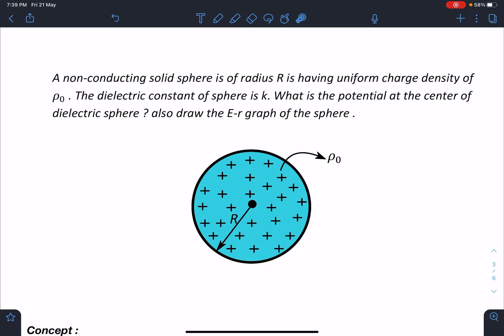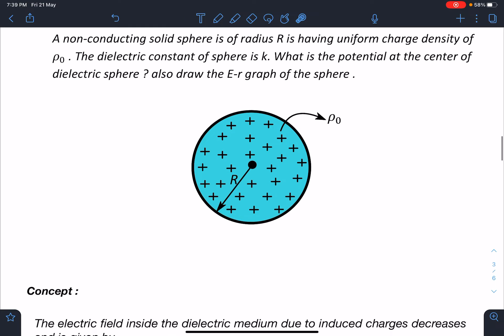It is a non-conducting sphere or you can say dielectric sphere having dielectric constant of k. Normally we deal this question with k equal to 1 in standard books. So here we are taking the dielectric constant as k.